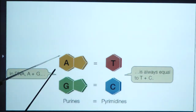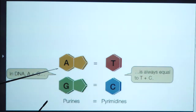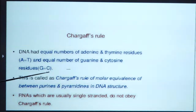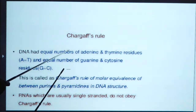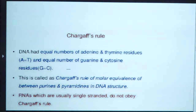In DNA: adenine equals thymine and guanine equals cytosine, so thymine plus cytosine equals purines equals pyrimidines. This is called Chargaff's rule of molar equivalence between purines and pyrimidines in DNA. RNAs, which are usually single-stranded, do not obey Chargaff's rule, because ribonucleic acids are single-stranded.